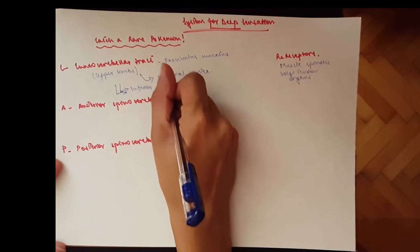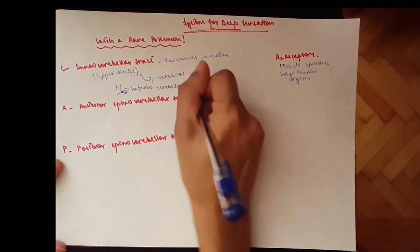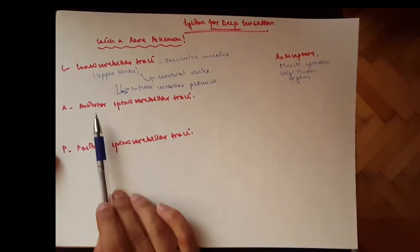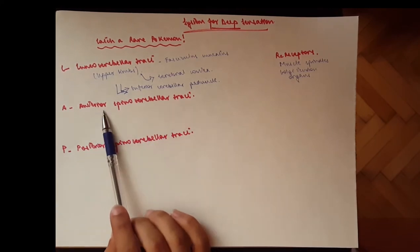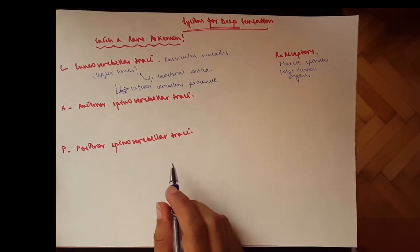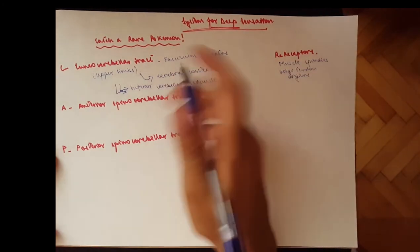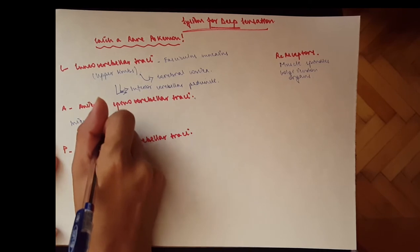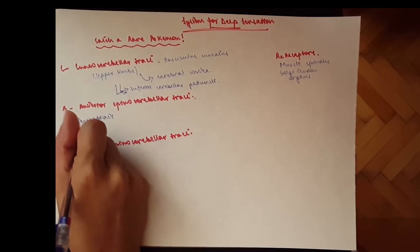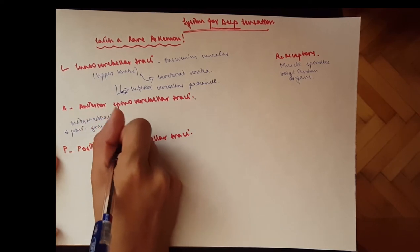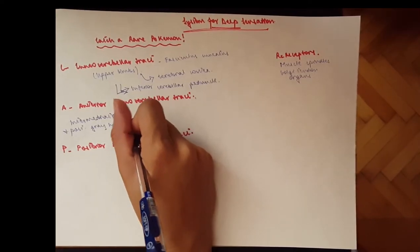Okay, then we have the anterior spinocerebellar tract. This tract is also known as Gowers, it's called anterior spinocerebellar tract of Gowers. And it comes from these, so the receptors take it to the intermediate and the posterior gray horn of the spinal cord, and from here it goes to the cerebellum.